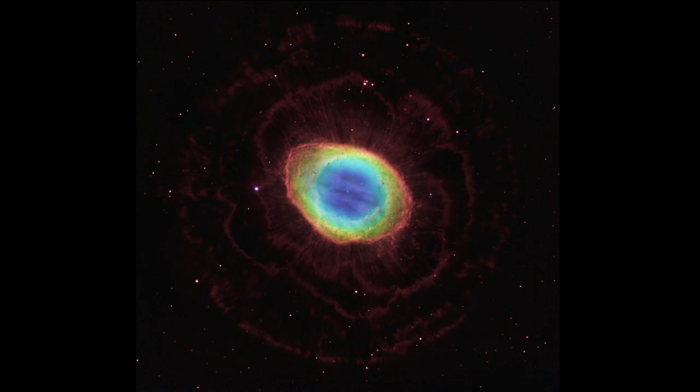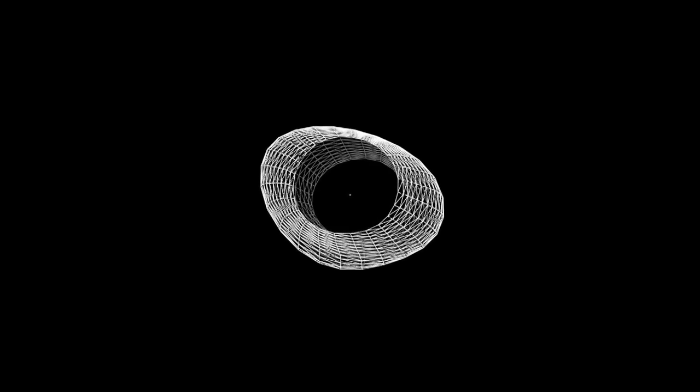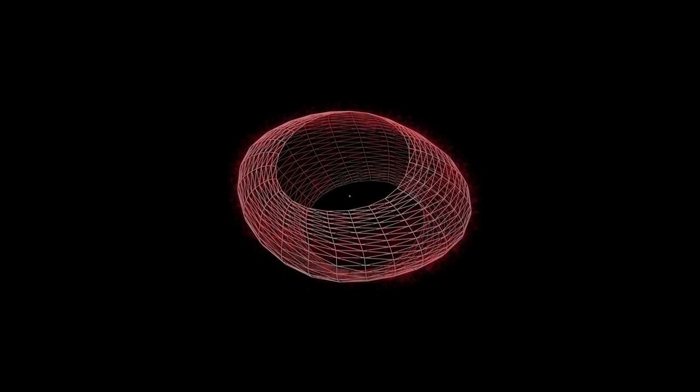The nebula turns out to have a much more complex shape than we can see from Earth. The main structure of the nebula is a broad ring of nitrogen. That's the red ring you see.